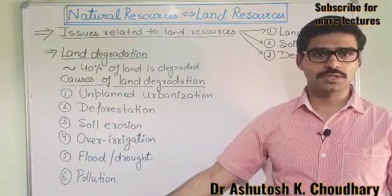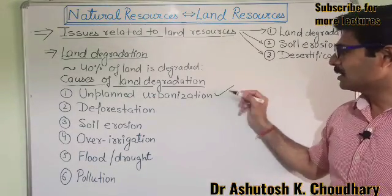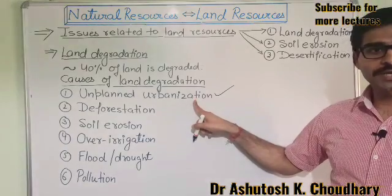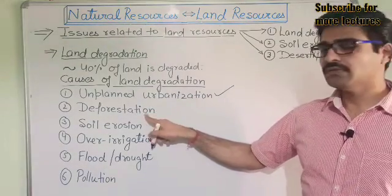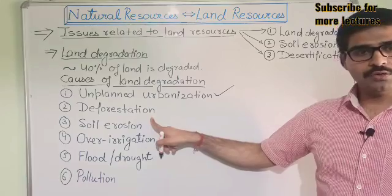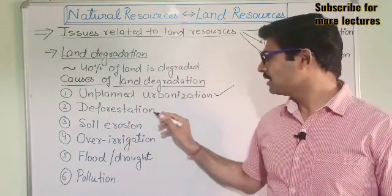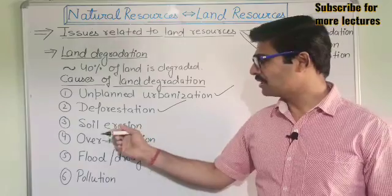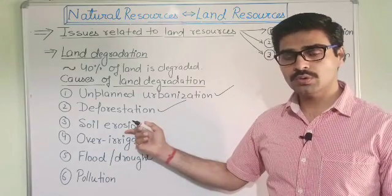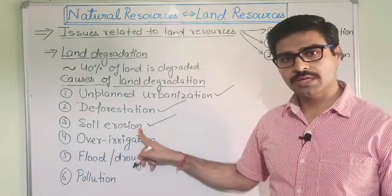Now what are the causes for land degradation? First is urbanization — if urbanization is not properly designed or planned, that is a reason for land degradation. Second is deforestation. Forest plays a major role in the productivity and maintenance of land resources, so deforestation is a main reason for land degradation. Here we also have a significant reason: soil erosion, which is one of the most significant factors responsible for the degradation of land resources, particularly agricultural land.